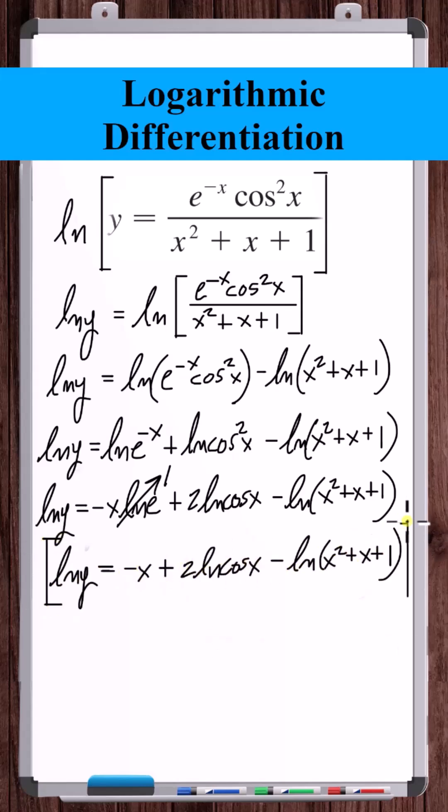Now let's take the derivative of this entire equation with respect to x. d/dx natural log of y is one over y, y prime. Derivative of minus x is minus one.